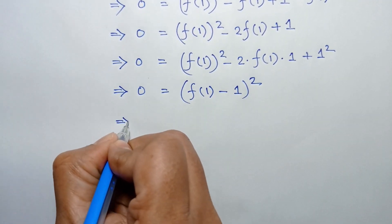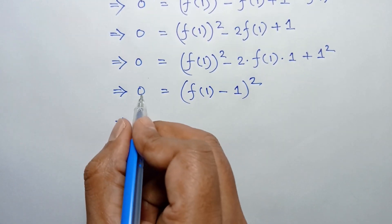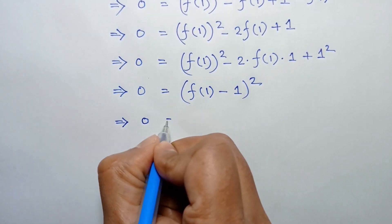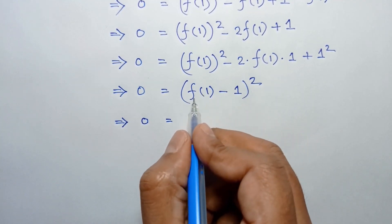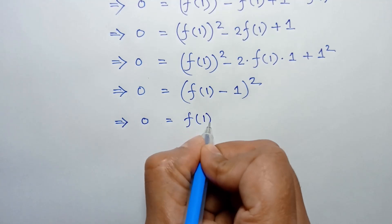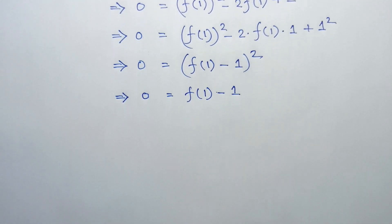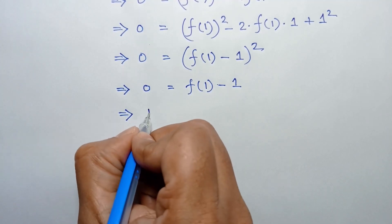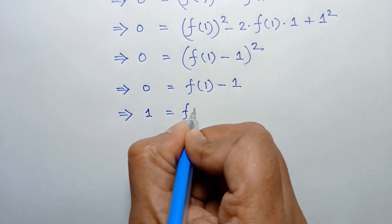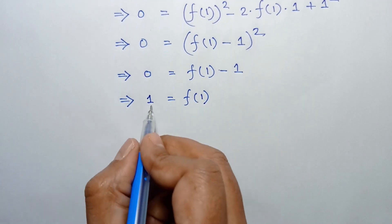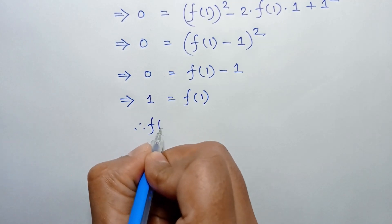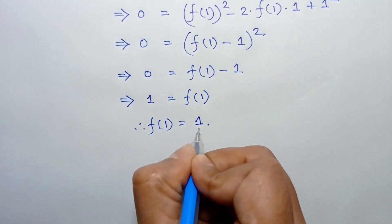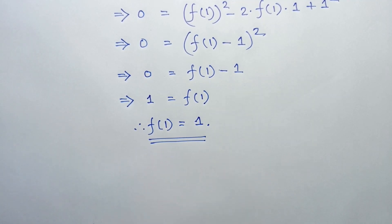Taking the square root of both sides, square root of zero is zero, and the square root and square cancel on the right side, leaving f(1) minus one equals zero. Therefore f(1) equals one. So this is the value of f(1). If you like this video, please subscribe to my channel. Thanks for watching.